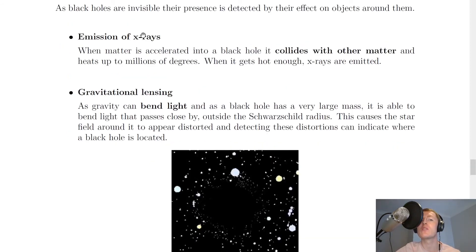The first way of detecting black holes is via the emission of X-rays. When matter is accelerated into a black hole, it collides with other matter and heats up to millions of degrees. When it gets hot enough, X-rays are emitted. So if we can detect the emission of X-rays in space, then that might suggest that there is a black hole.